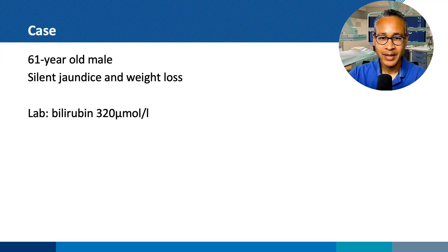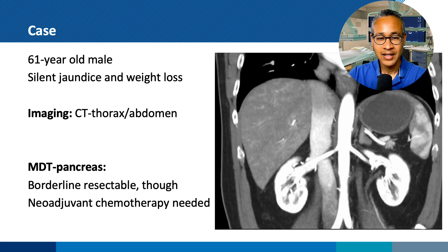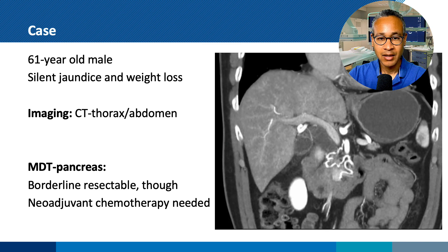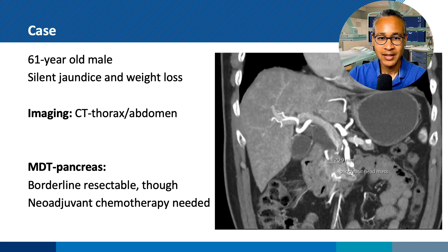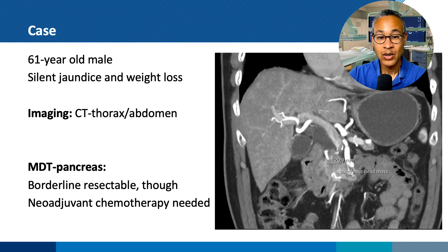Dear colleagues, welcome to this semi-live procedure. This one concerns a 61-year-old male with silent jaundice and weight loss, and a bilirubin of 320 micromoles per litre. Imaging on CT thorax-abdomen showed a lesion in the pancreatic head of about 20 millimeters and a grossly dilated bile duct. The patient was discussed at our MDT pancreas and the lesion was deemed to be borderline resectable, though neoadjuvant chemotherapy would be needed.